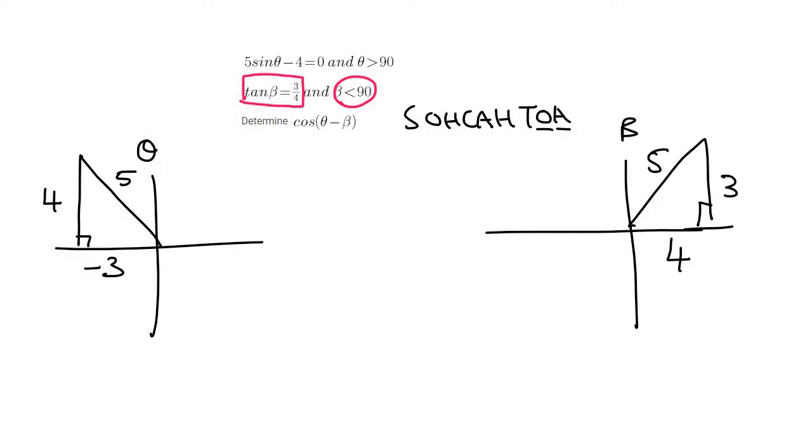Now, here's where I see a lot of students make mistakes. They look at this, and they think that this means cos theta minus cos beta. And so then they go look for cos theta and cos beta. Instead, what you want to do is use your formula sheet.